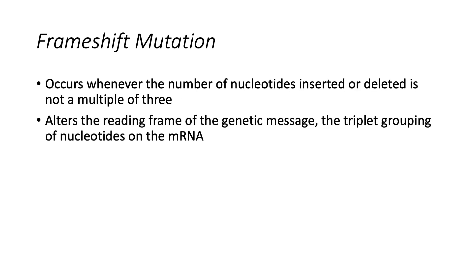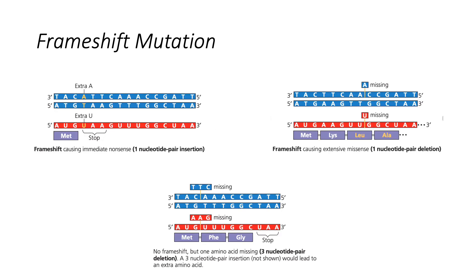Under insertion or deletion is frameshift mutation. Insertion or deletion of nucleotides may alter the reading frame of the genetic message, which is the triplet grouping of nucleotides of the mRNA that is read during translation. Such a mutation, called a frameshift mutation, will occur whenever the number of nucleotides inserted or deleted is not a multiple of 3. All the nucleotides that are downstream of the deletion or insertion will be improperly grouped into codons, and the result will be extensive mis-sense, usually ending sooner or later in nonsense and premature termination. Unless the frameshift is very near the end of the gene, the protein is almost certain to be non-functional.